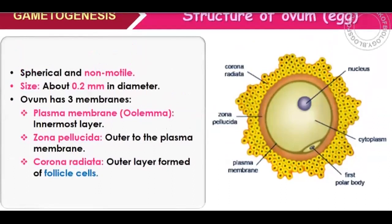Now let's see the structure of the ovum in detail. The egg is spherical, non-motile, and much bigger than sperm. The ovum is 0.2 millimetres, while sperm was about 0.06 millimetres in diameter — sperm is very small in comparison to the ovum.